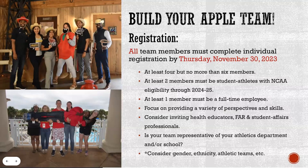We've changed that role so at least two student athletes must be around for the next year, but you can bring four or five student athletes if you want. One of your team members must be a full-time employee, which is generally your team contact. As you think about who to bring, consider different roles — maybe your faculty athletic representative, someone in your counseling center or a health educator who could help build bridges across your campus. Look at gender representation, ethnicity, and try not to have four people from the same athletic team. How can you really build on your strengths and have a diverse, representative team?